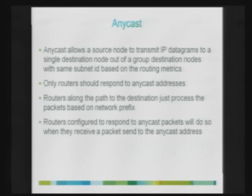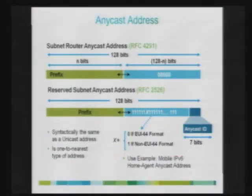You cannot actually distinguish between a global IP address and an anycast IP address. Anycast is used in some transition techniques like 6-to-4 tunneling or 6RD to advertise border routers. There is also a subnet router anycast address with N bits of subnet and all zeros for the host portion. Reserved subnet anycast addresses are used for different applications — for example, the mobile IPv6 home-agent anycast address.